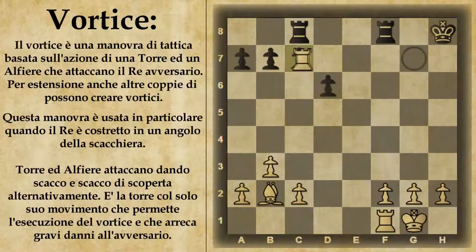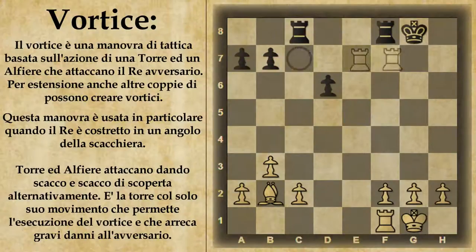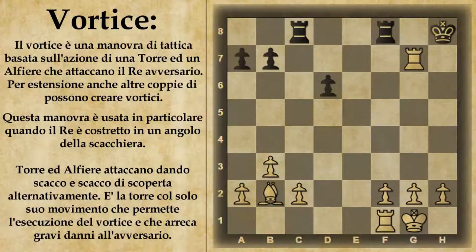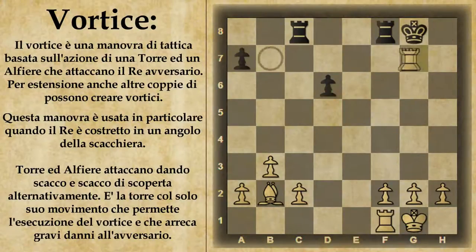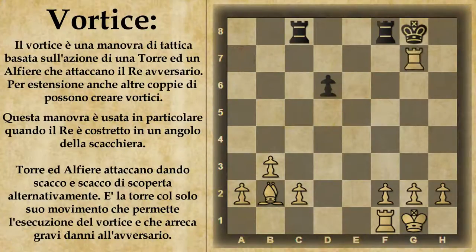Volendo, il bianco può far fuori tutta la traversa. Tutti i pedoni che sono presenti qui possono essere distrutti dalla torre bianca, sempre continuando con lo stesso giochetto: scacco, il re sposta, scacco di scoperta, e così via. A questo punto il bianco rimane praticamente con due torri e un alfiere contro due torri, senza contare ovviamente tutti i pedoni, quindi ha praticamente partita vinta.